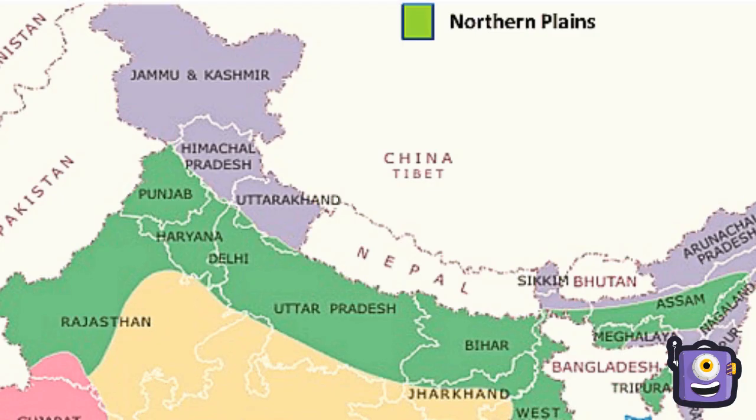The northern plains lie to the south of the Himalayas. They are generally level and flat. These are formed by the alluvial deposits laid down by the rivers Indus, Ganga, Brahmaputra, and their tributaries. These river plains provide fertile land for cultivation, which is the reason for the high concentration of population in these plains.